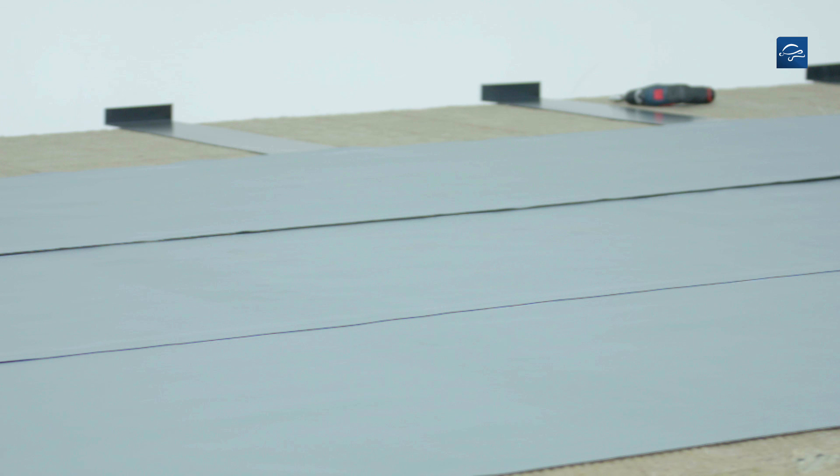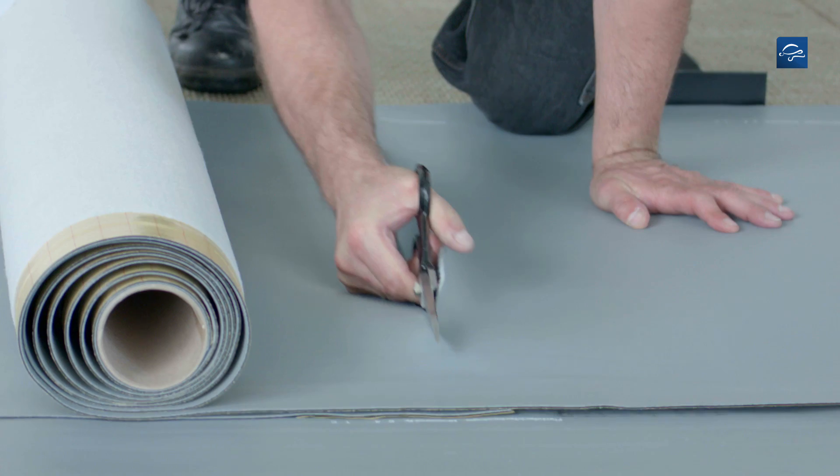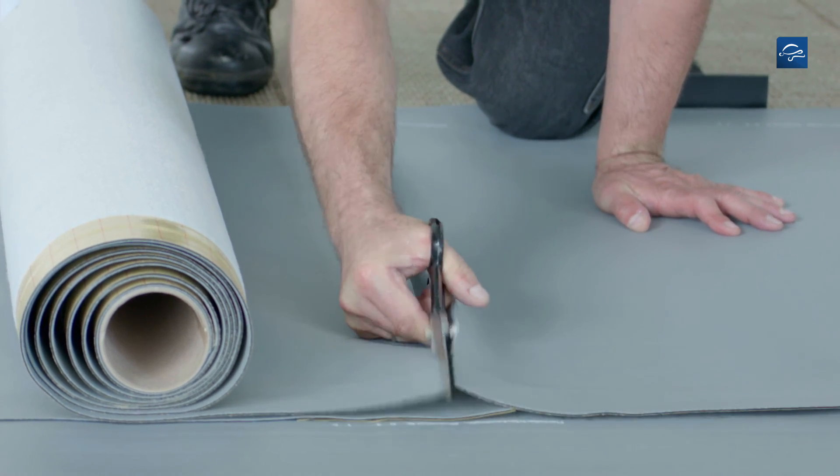Sealing at the longitudinal seam is achieved with the self-sealing edge of the FK roofing membranes. The overlap at the cross seams should not be less than 5cm.